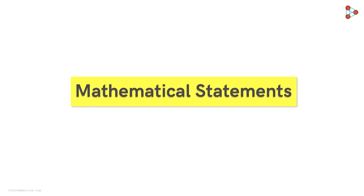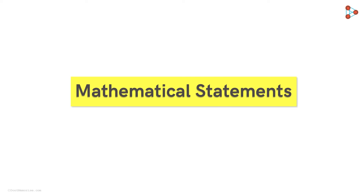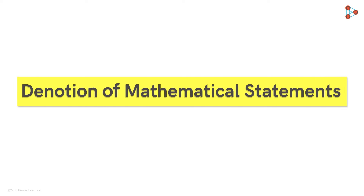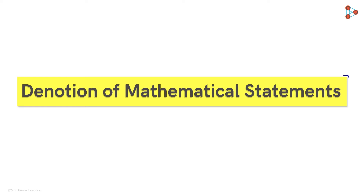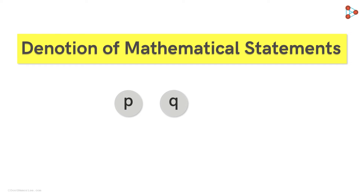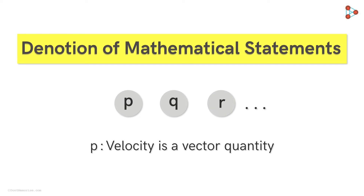In our previous video, we studied what mathematical statements are, but do we know how they are denoted? Mathematical statements are generally denoted using lowercase letters like P, Q, R, and so on. So it can also be written as this. Pretty simple, isn't it?